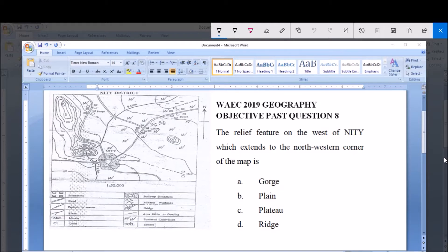The relief feature on the west of Niti which extends to the north-western corner of the map is: a. Gorge, b. Plain, c. Plateau, d. Ridge. So this is Niti on the map and we are asked to look for